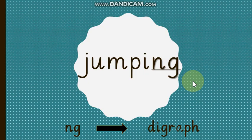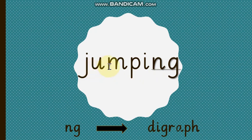The next word you are watching is JUMPING. As you can see, there is a digraph in this word which is NG — two letters, one sound. Let's read it with the sounds and then blend it — JUMPING. The word is JUMPING. Very nice.